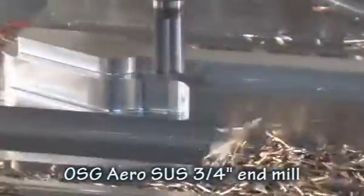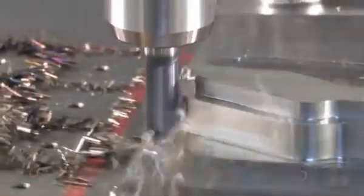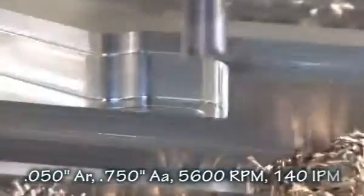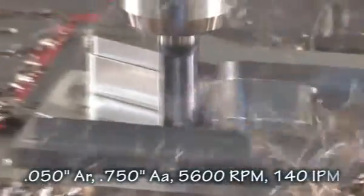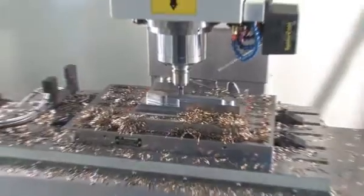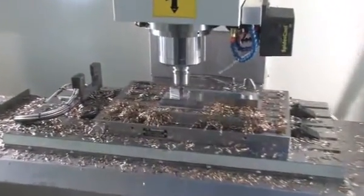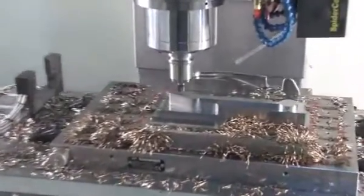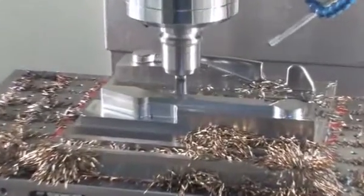OSG's AeroSUS cutters can remove up to 15 cubic inches of stainless steel per minute or more. The machine easily handles the cut smoothly and quietly, extending cutter life with its rigid support.